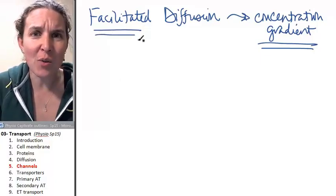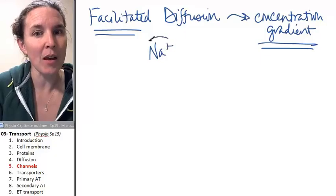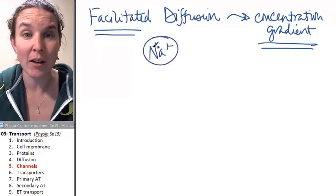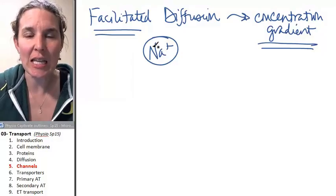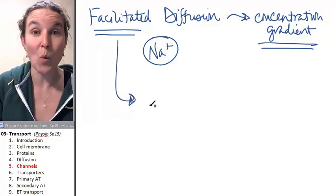If the molecule can't, like my friend sodium, the sodium ion cannot pass through the cell membrane, then let's facilitate that. And you can facilitate the diffusion with a protein.